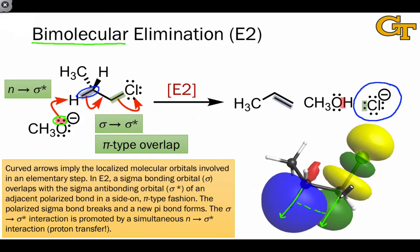It requires that the axes of the sigma and sigma star orbitals be parallel and that the larger lobe of the sigma star orbital be aligned with the largest lobe of the sigma bonding orbital for the C-H bond.